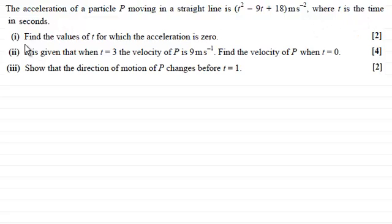And there's three parts to this question. The first part is to find the values of t for which the acceleration is 0. In the second part, it is given that when t equals 3 the velocity of P is 9 meters per second. Find the velocity of P when t equals 0. And finally in part 3, show that the direction of motion of P changes before t equals 1.